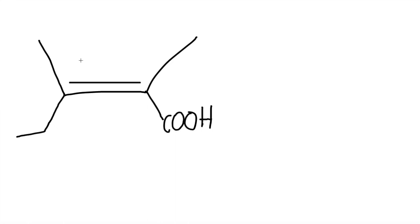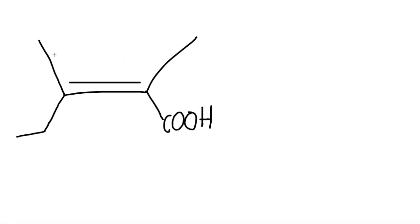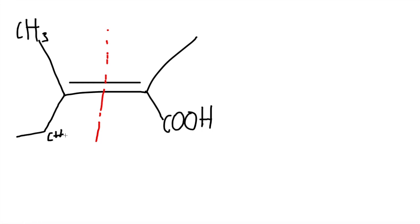In this next problem you see that the double bond is in the middle. We want to separate it into two sides where the double bond is. Looking at the carbon on the left side, we see it is connected to a CH3. On the right side it is connected to a CH2 and a CH3. So we go step by step.